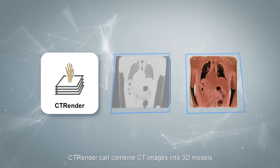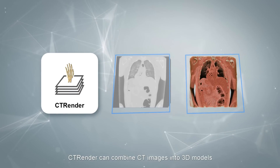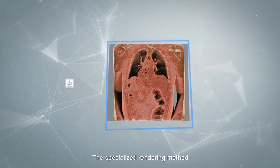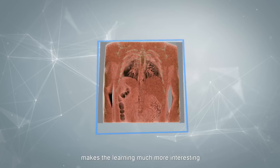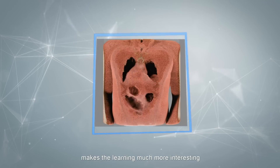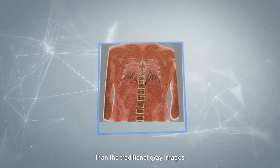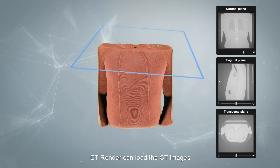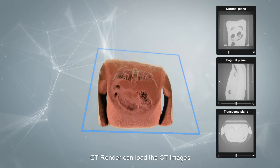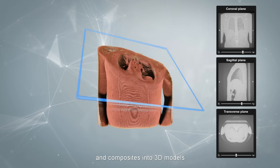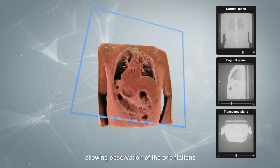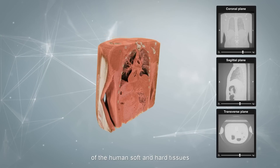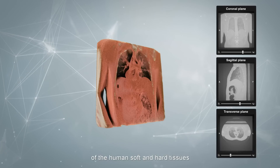CTRender can combine CT images into 3D models. The specialized rendering method makes learning much more interesting than traditional grey images. CTRender can load CT images and composites into 3D models, allowing observation of the orientations of the human soft and hard tissues.